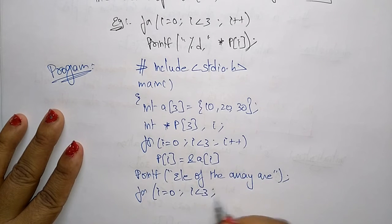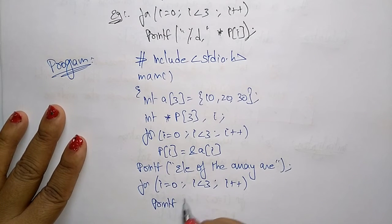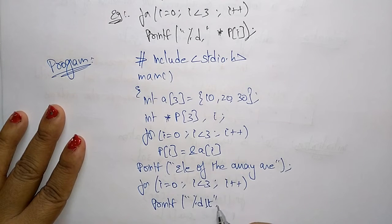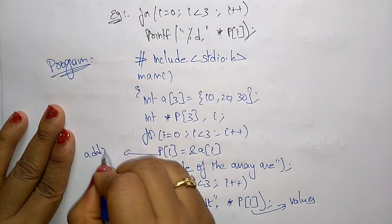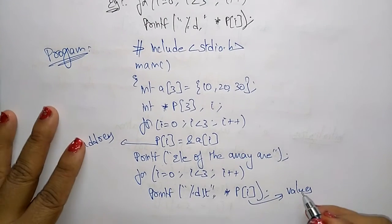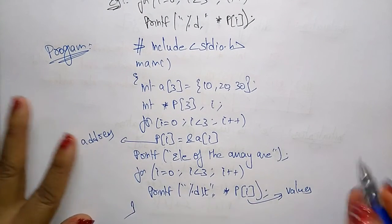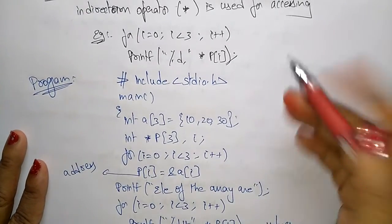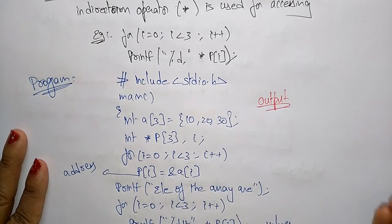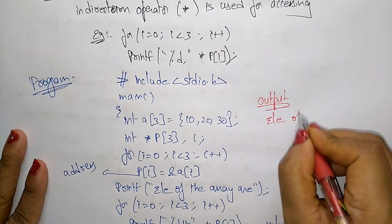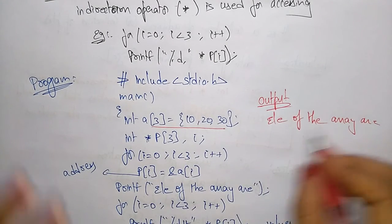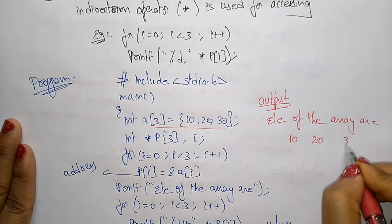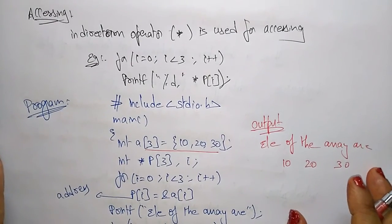For printing each value using the pointers, use a for loop and write `printf("%d\t", *p[i])`. Here `p[i]` holds the address and `*p[i]` prints the value stored at that address. Close the main function. The output will print 'elements of array' followed by 10, 20, 30 with tab spacing. This is about arrays of pointers, thank you.